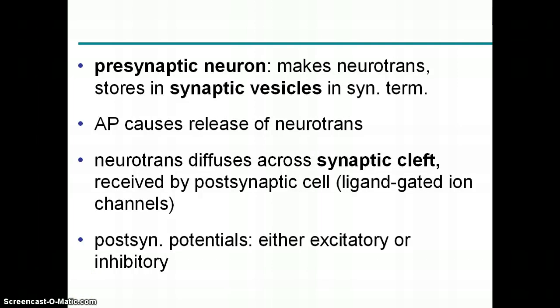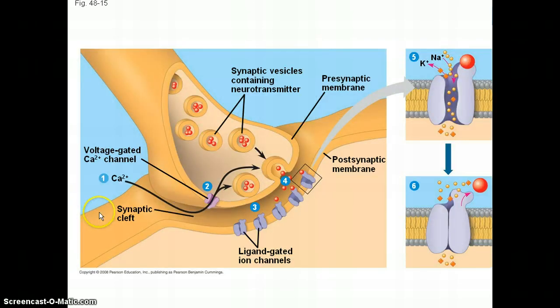The presynaptic neuron has a neurotransmitter stored in those vesicles, and when stimulated, the vesicles fuse with the membrane and release the neurotransmitters into that cleft. The neurotransmitters then bind with receptors on the post-synaptic neuron and can either be excitatory or inhibitory — making it more likely or less likely for the next neuron to fire.